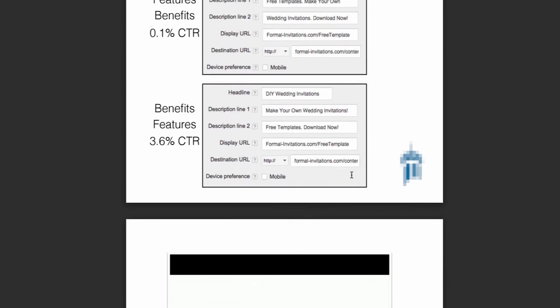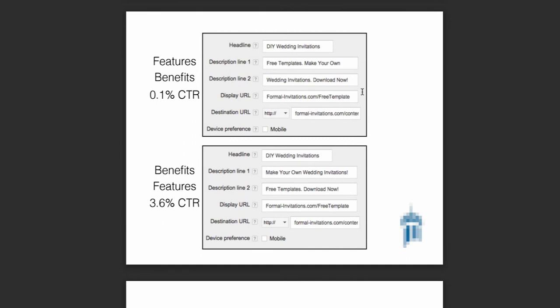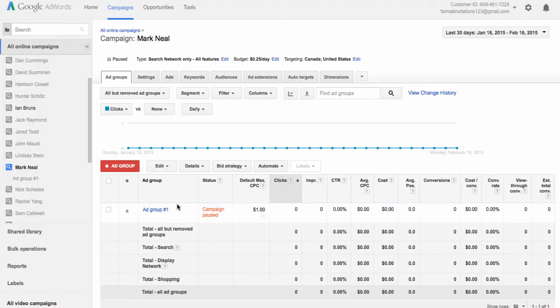One other best practice is to capitalize every single word in your ad, even in the headline. The other important thing to think about is you've got your benefits and your features — you want to make sure you have a strong call to action. So in the second ad example, we have 'Download Now.' It could be 'Learn More' or 'Visit Our Site' — something that will give people a direct action to take. So let's go back and create an ad.